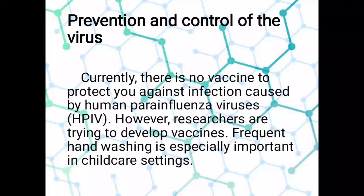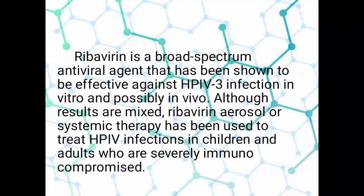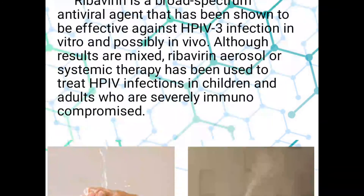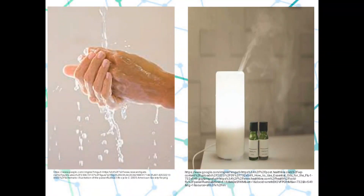There are prevention and control measures for the virus. Currently, there is no vaccine to protect against infection caused by human para-influenza viruses; however, researchers are trying to develop vaccines. Frequent hand washing is especially important in childcare settings — we must maintain proper hygiene to escape the adverse effects of the virus. Ribavirin is a broad-spectrum antiviral agent shown to be effective against HPIV-3 infection in vitro and possibly in vivo. Although results are mixed, ribavirin aerosol or systemic therapy has been used to treat HPIV infection in severely immunocompromised children and adults.